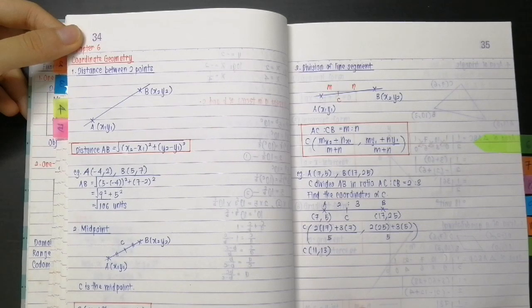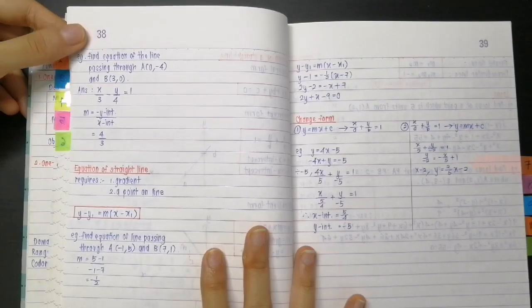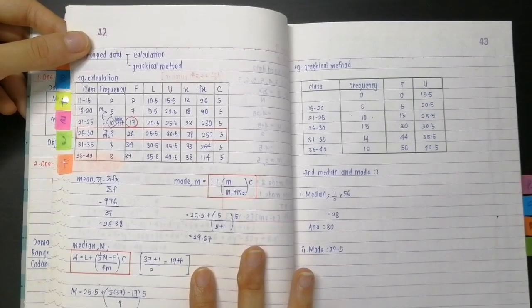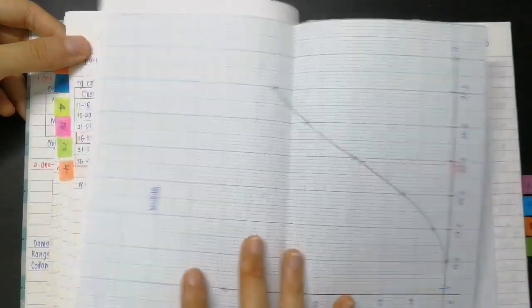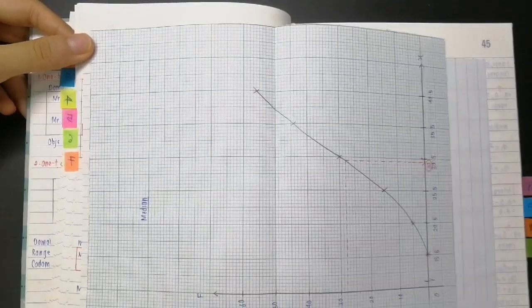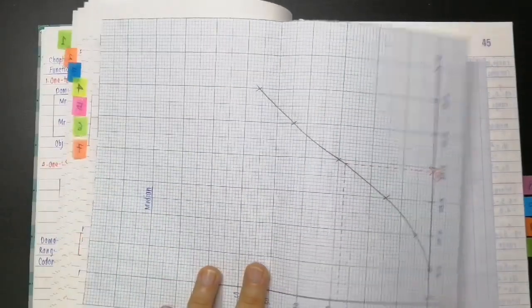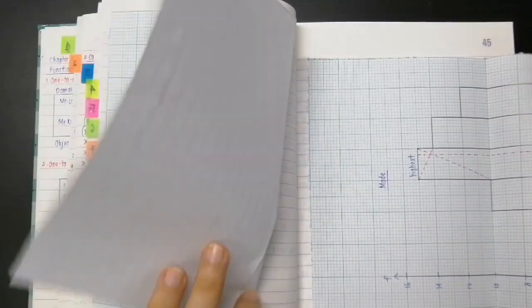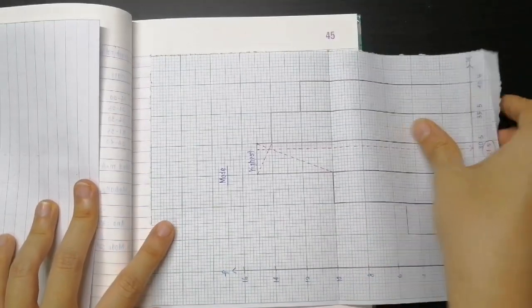And then this is Chapter 6, coordinate geometry. And if you see here these are the important things that I kind of underlined in red. And this is my graph. I was really meticulous with this notebook. I even included graphs inside here because for this chapter you really need graphs to understand what is going on. So I drew the graphs and marked it in red pen so I knew exactly how to do everything.